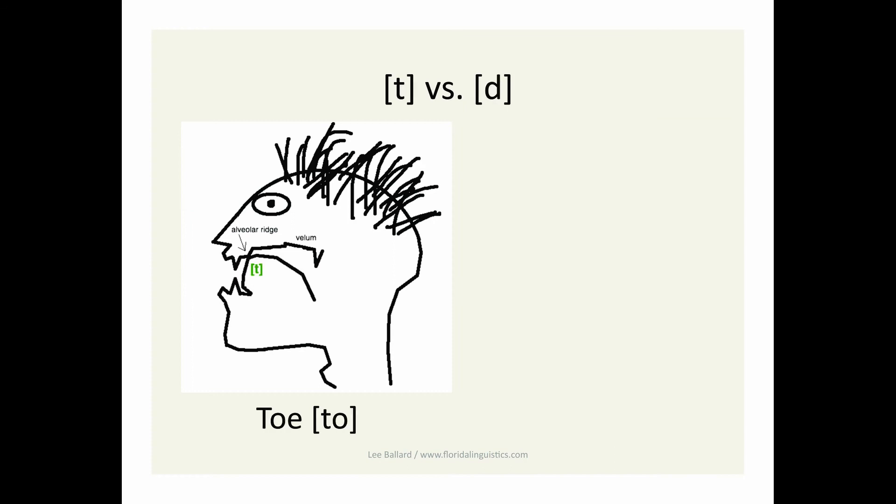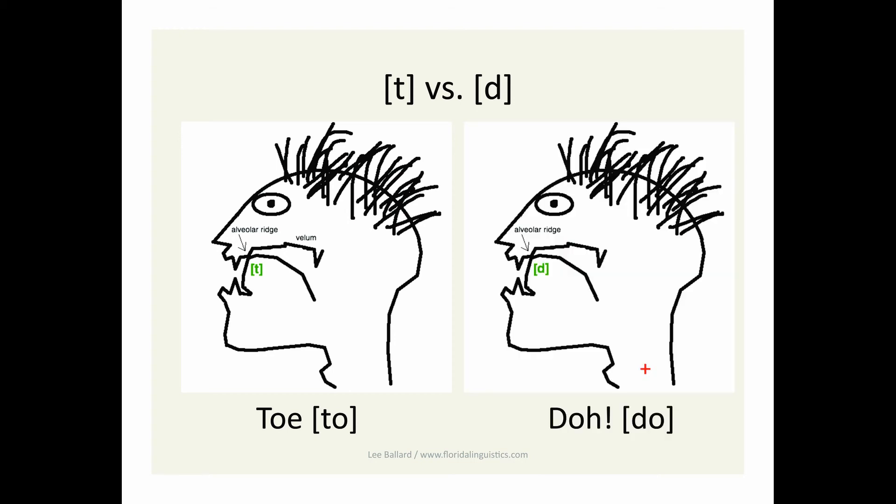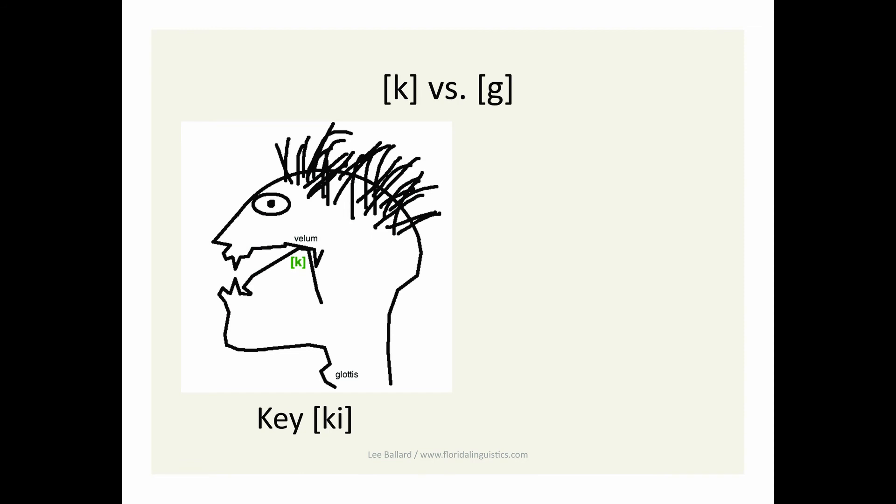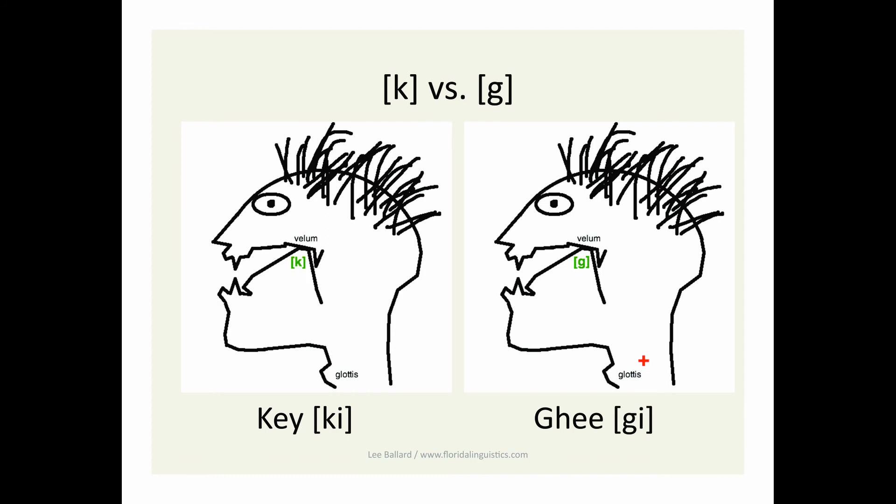Ditto for T and D. To is voiceless. Do is voiced. In a very similar manner, the consonant in Ki has no voicing. But Gi has it.